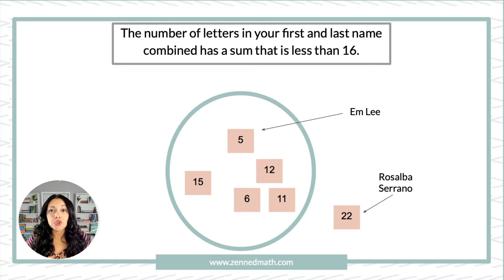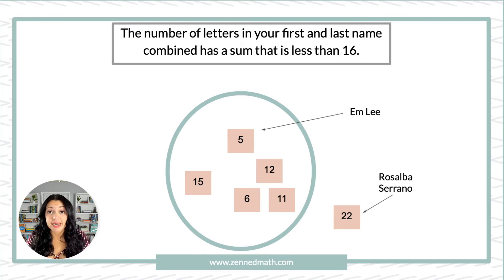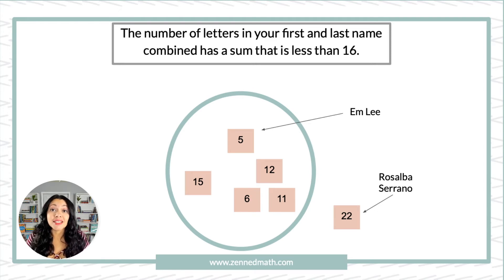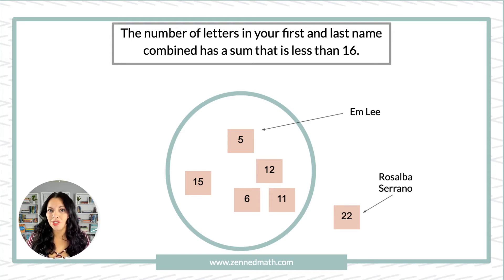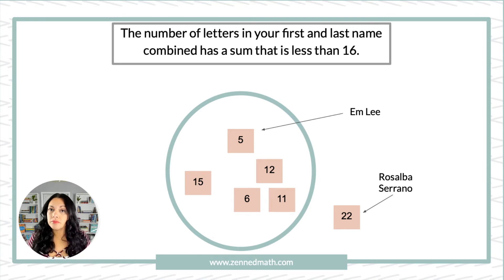You basically gather the students to talk about what they notice about the data. There are conversations after they solve and place their post-its up. You can ask students to make statements — for example, students may notice that there are more kids whose names have fewer than 16 letters. A student can say, 'I noticed that there are two kids with really short names because I see the numbers five and six — those are the lowest.'